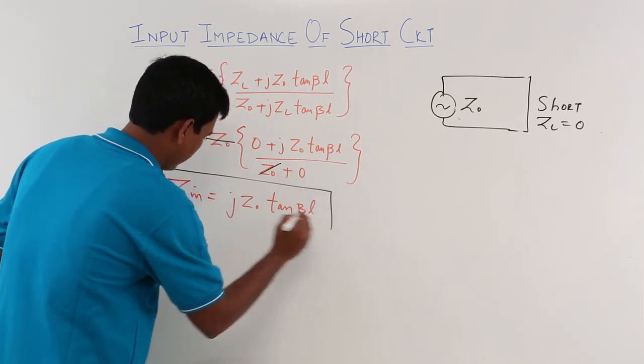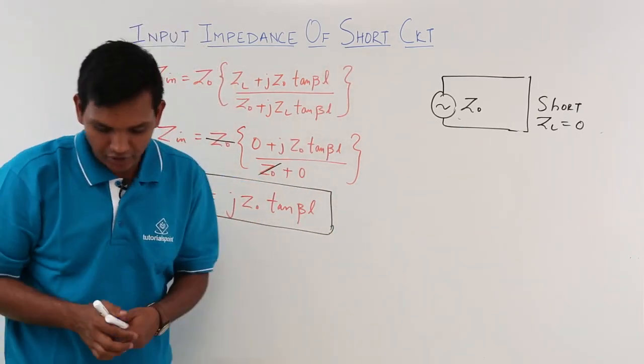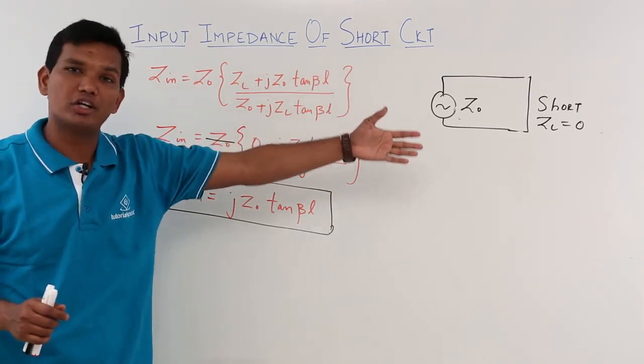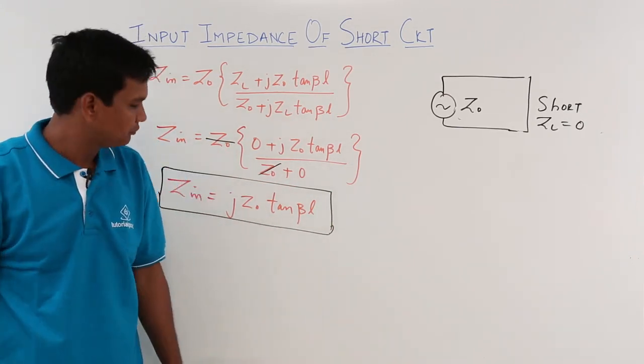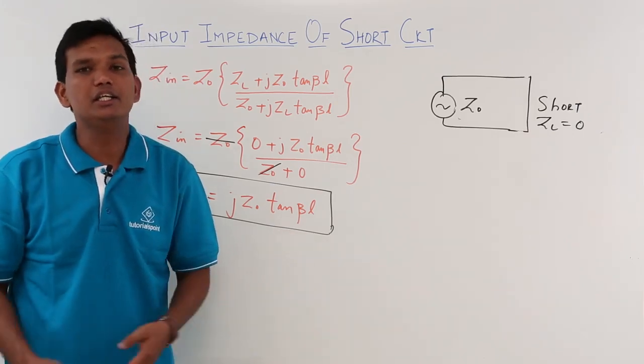This is the input impedance in case of a short circuit. We have concluded what would be the input impedance when your load is short circuited, which comes out to be j Z₀ tan βL. We will see how we will use this in numerical problems in future videos.